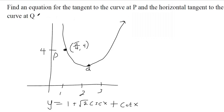They're asking for two things here: the equation for the tangent to the curve at P, so that means we want this red equation, and then the horizontal tangent to the curve at Q. So we'll start with the first one.